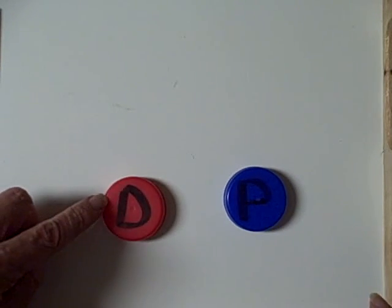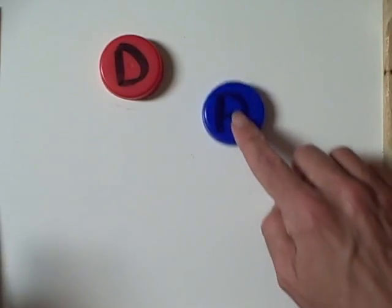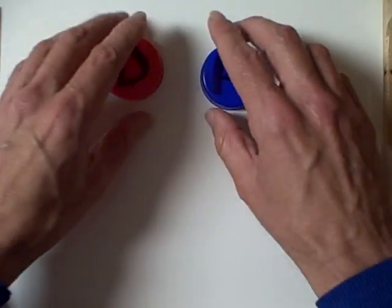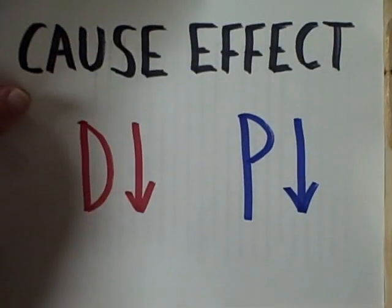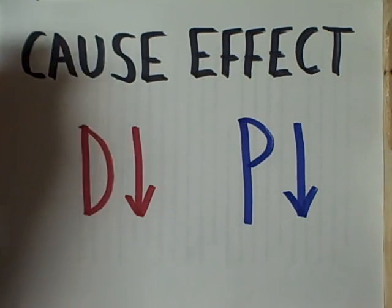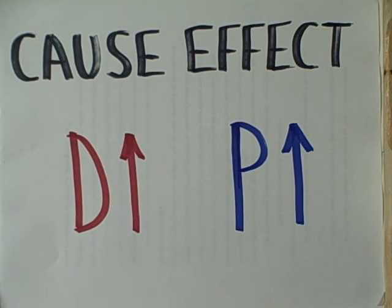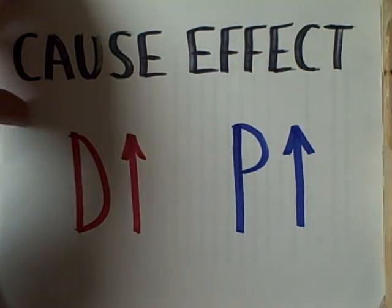Demand moves and price follows. So that's the pigeon seeking protection of the dog. Demand goes down, price goes down. The demand goes up and increases, so does the price.